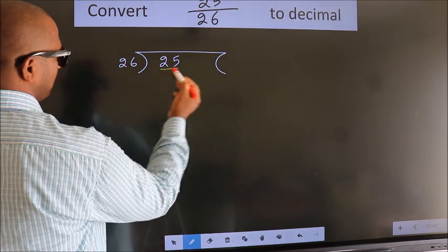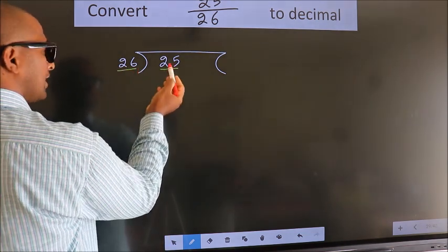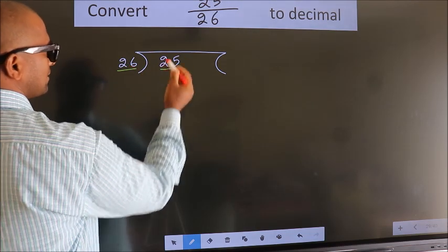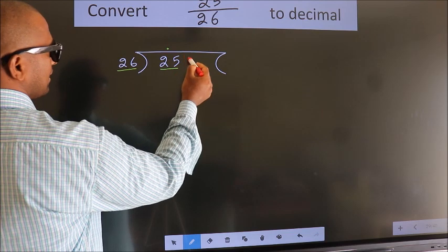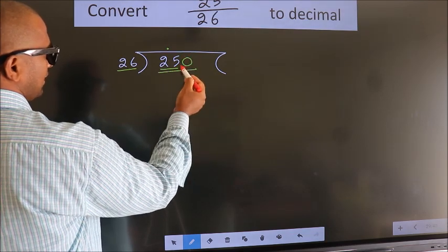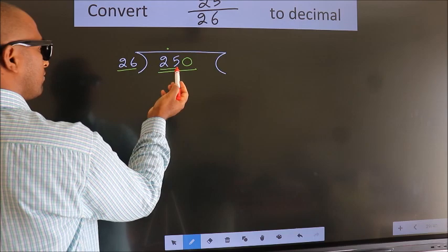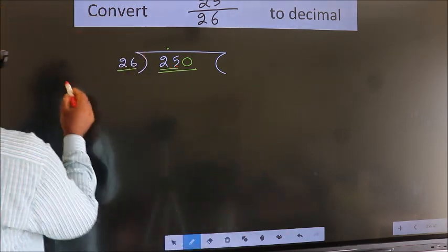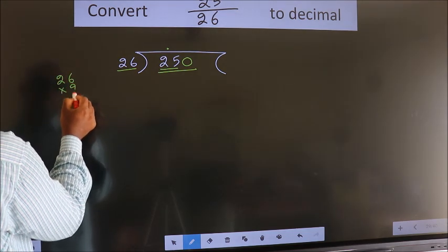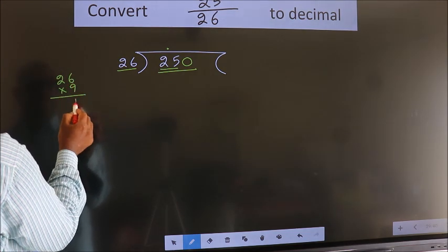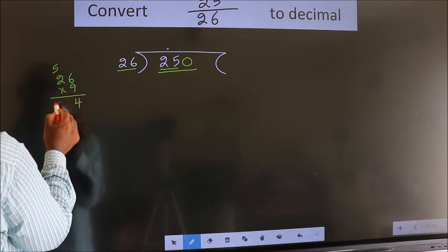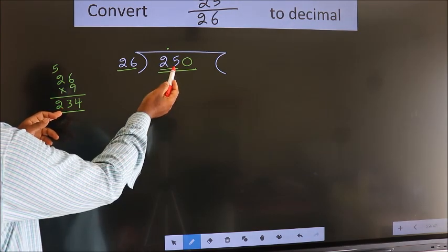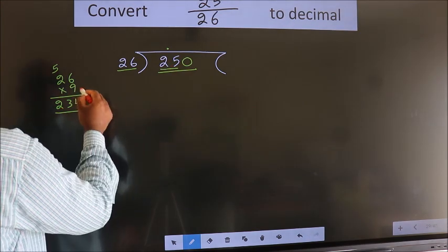Here we have 25, here 26. 25 is smaller than 26, so we should put a dot here and take 0 here. So 250. A number close to 250 in the 26 table — let us go with 9. So 26 times 9: 9×6=54, 9×2=18, plus 5 gives 23, so 234. 234 is close to 250, so we should go with 9.